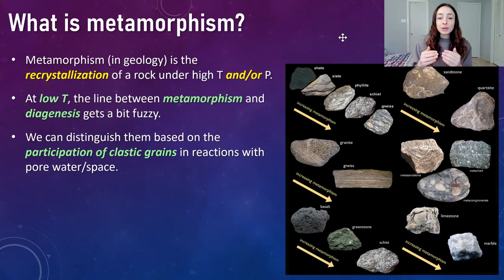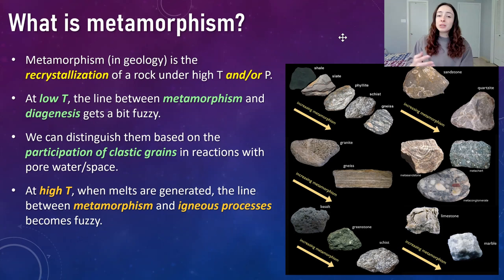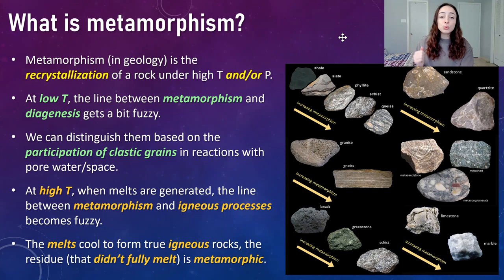On the other spectrum, at high temperatures, melts can be generated from rock material, making the line between metamorphism and igneous processes a little fuzzy. We can define this line: the melt that forms at high temperatures cools or crystallizes to form true igneous rocks, whereas the residue that didn't fully melt is metamorphic. Metamorphic rocks can form in a variety of environments under a variety of conditions.